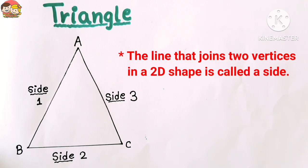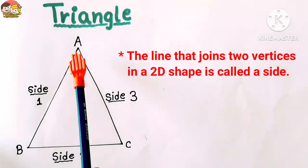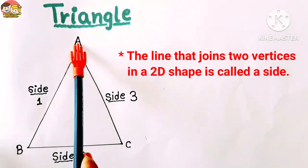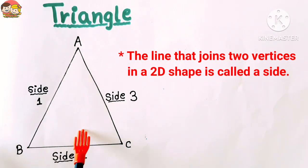The line that joins two vertices in a 2D shape is called a side. In other words, a side means the line that connects two points of a 2D shape. Now, what are vertices in shapes?